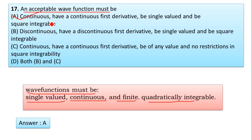Wave function must be single-valued, the wave function must be continuous, and the wave function must be finite and quadratically integrable. So answer here is correct: the wave function is continuous, has a continuous first derivative, is single-valued, and is square integrable. So options B and C are ruled out, and option D is also ruled out. Option A is correct.